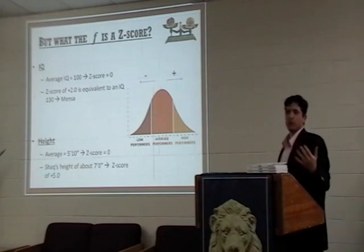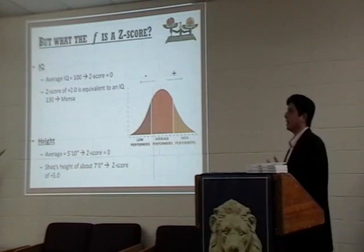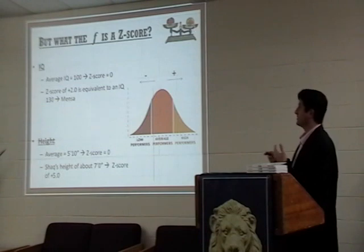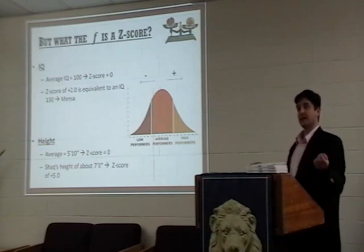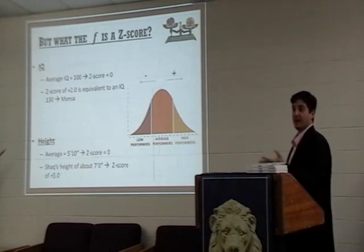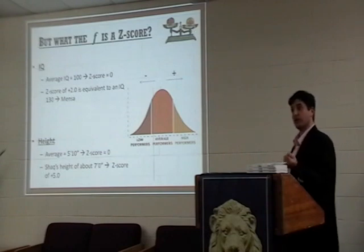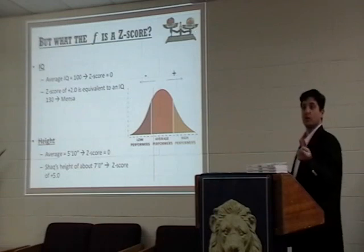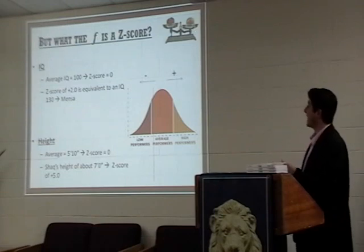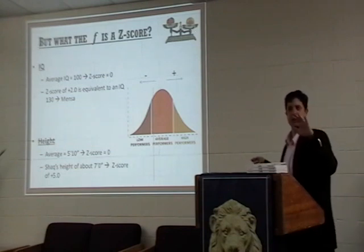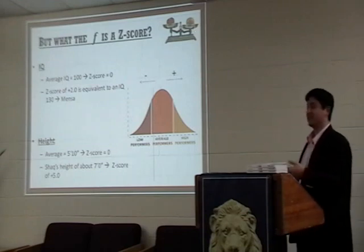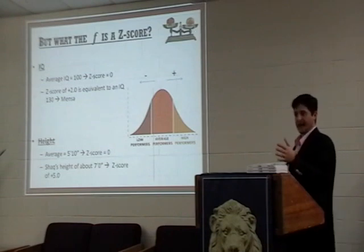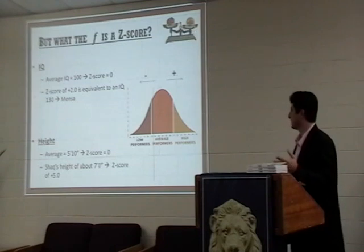Talking about familiar variables — IQ and height. Someone with an IQ of 100, the average IQ, yields a z-score of 0. However, someone with a z-score of plus 2 would have an IQ of 130, which is significant enough to be eligible for Mensa, the Society for People with High IQ. So a z-score of plus 2 is actually really strong. When it comes to height, a person of average height — 5'10" — has a z-score of 0. Shaquille O'Neal's height of 7 feet has a z-score of plus 5. Most of us haven't met a person 7 feet tall, which shows how rare a z-score of plus 5 really is.